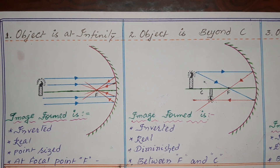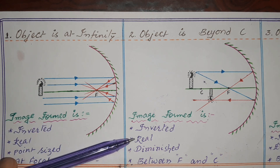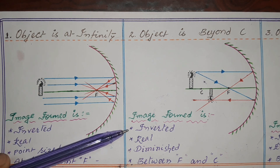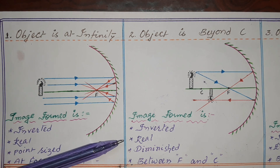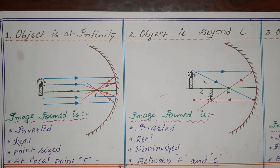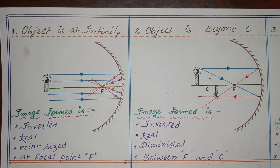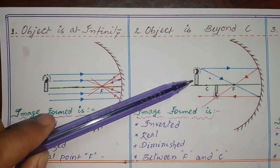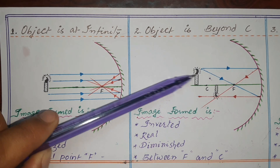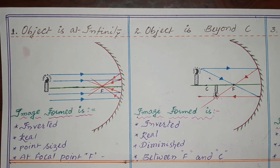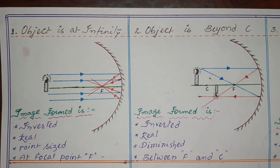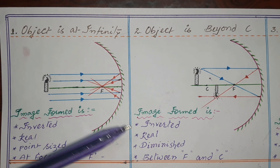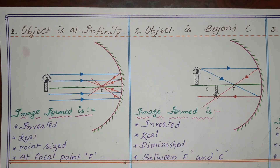Dear students, remember that real images are always inverted — no real image is erect. In this diagram, when the object is kept beyond C, the image is formed in between F and C, and it is real and diminished.